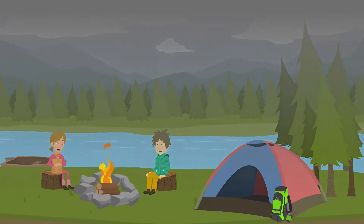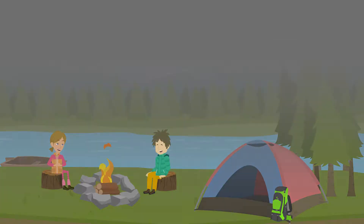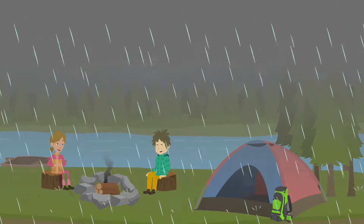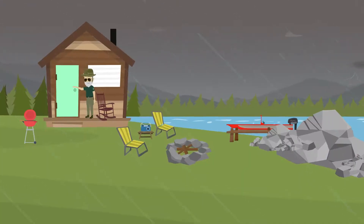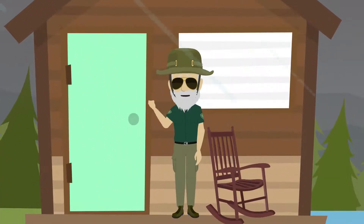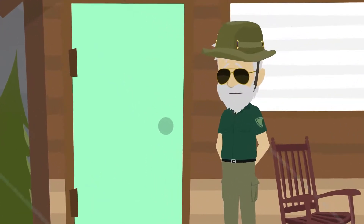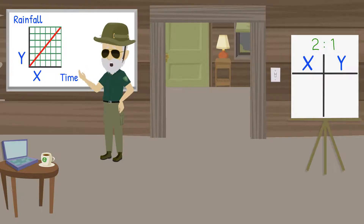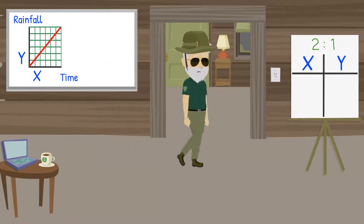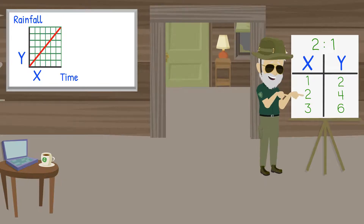It sure is getting cloudy — I thought you said it wasn't supposed to rain. We should probably get inside. Here, I have charted some of the data for how much the lake will rise. Proportional relationships will always look like this on a graph — always a straight line, and always go through point (0, 0). And here are the same numbers on a table.